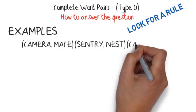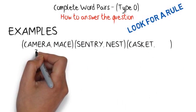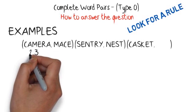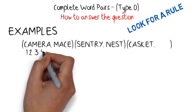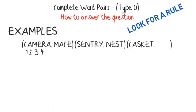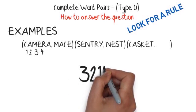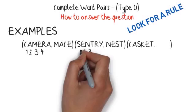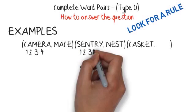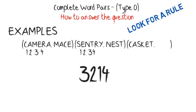The positions that the letters in the second word occupy in the first word is the first thing to look for. M is position 3, A is position 2, C is position 1, and E is position 4. The order for this group is 3, 2, 1, 4. Now look at the second group and work out the word positions again. N is position 3, E is position 2, S is position 1, and T is position 4. The order is 3, 2, 1, 4. The rule for this question between the letters of the first and second word is 3, 2, 1, 4.